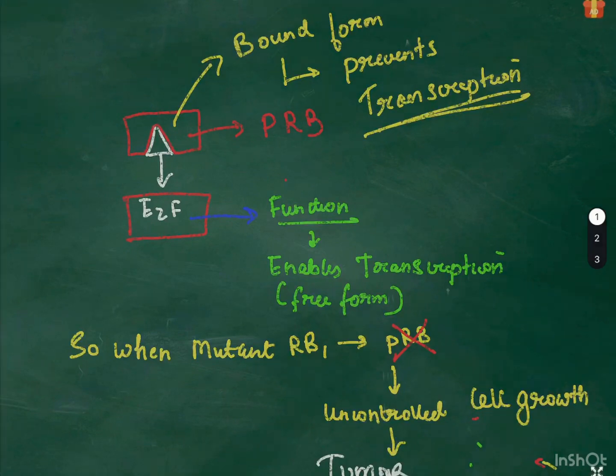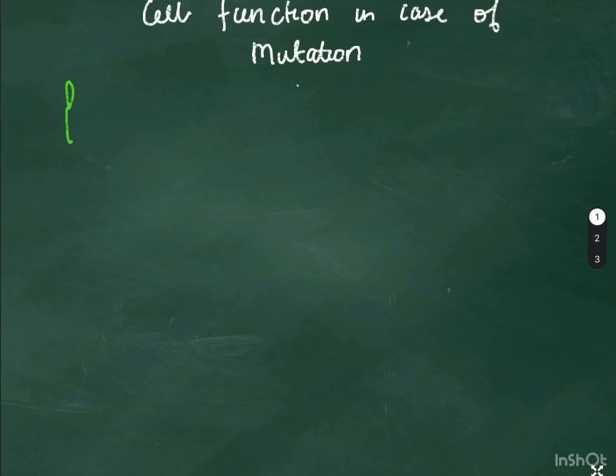Looking at how the cell function is affected during the mutation, in case of the mutation of one copy or in the case of mutation of both copies, the cell function is affected in different ways.